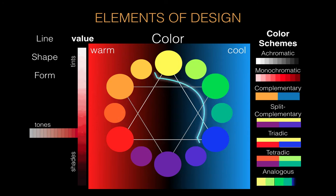And lastly, analogous — analogous means any three to five colors in a row on the color wheel. You could start anywhere: if you start at yellow, you could have yellow, yellow-green, green — that would be three. Or if you go all five: yellow, yellow-green, green, blue-green, blue. Similarly, you could start at blue-green and go blue-green, blue, blue-violet, violet, red-violet and have five that way. Any three to five in a row. These are your typical color schemes.